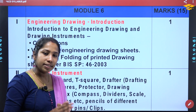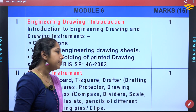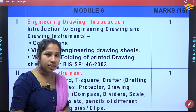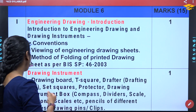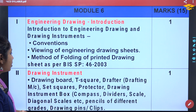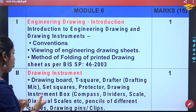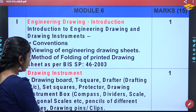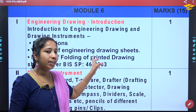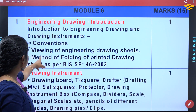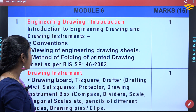Introduction to Engineering Drawing and Drawing Instruments — that is why we learn how to use Drawing Instruments. Drawing instruments include: Drawing Board, T-square, Drafter, Set Squares, Protractor, Drawing Instrument Box, Compass, and Divider. These are all the details. Then Conventions — conventions include viewing of engineering drawing sheets and method of folding of printed drawing sheets.